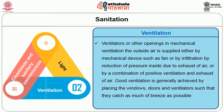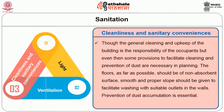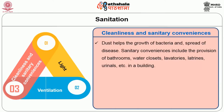Good ventilation is generally achieved by placing windows, doors, and ventilators to catch as much breeze as possible. Cleanliness and sanitary convenience are also important: floors should be non-absorbent with smooth surfaces and proper slopes for washing with suitable outlets. Prevention of dust accumulation is essential as dust helps the growth of bacteria and spread of diseases. Sanitary conveniences include provision of bathrooms, water closets, lavatories, latrines, urinals, etc. in the building.